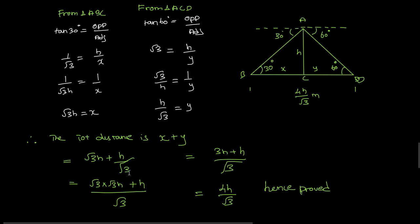To convert the mixed fraction, multiply by root 3. So root 3 into root 3H plus H, all divided by root 3. Root 3 into root 3 is 3, so 3H plus H by root 3. 3H plus H is 4H, so 4H by root 3.